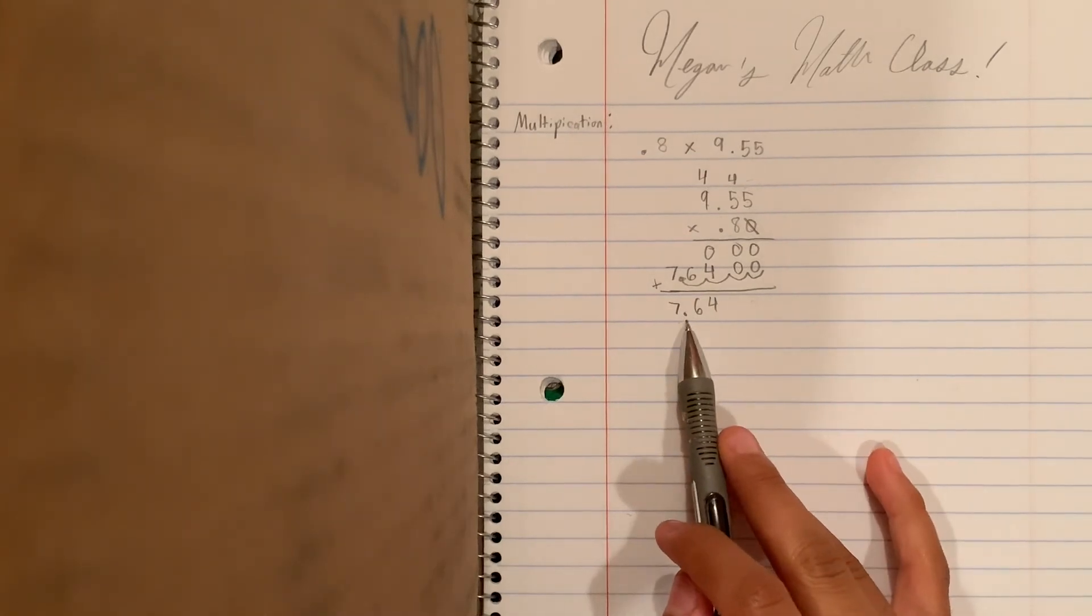And you can just leave those zeros out if you want. They're pretty irrelevant. Not important. And your final answer is 7.64.